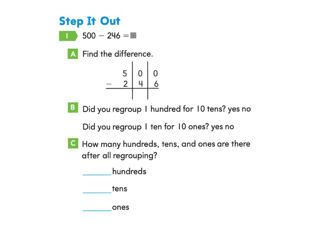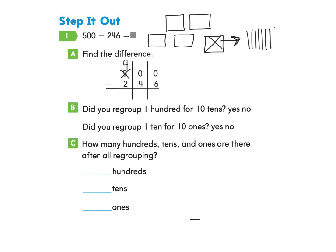We have 5 hundreds, so I'm going to take one of those hundreds — cross it out and make this into 4. I take that one hundred and move it over to the tens column, turning it into 10 tens. So now instead of 0 tens, I have 10 tens. But I still need to solve the ones column, so I'm going to take one of those 10 tens, cross it out, and regroup it into 10 ones.